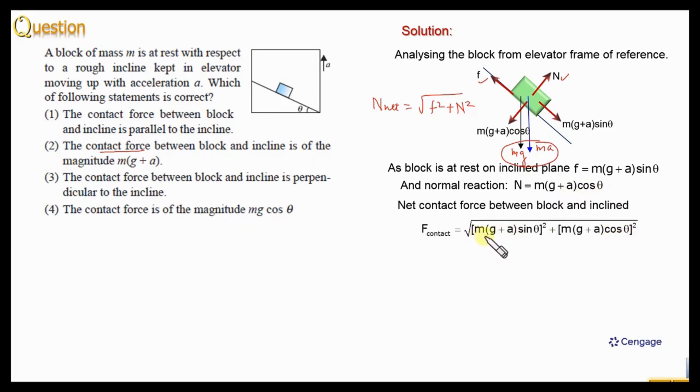Now we can take mg plus a common, mg plus a common here and here also, and this is the square we can take outside the under root. So we can write mg plus a times square root of sin square theta plus cos square theta. Sin square theta plus cos square theta is equal to 1, that means f contact should be equal to mg plus a.